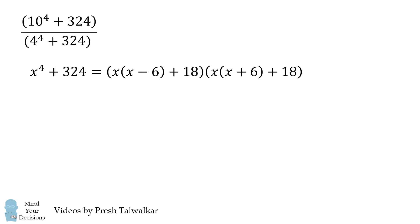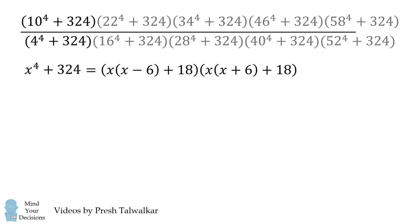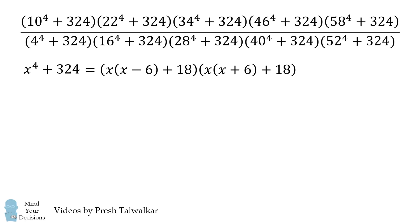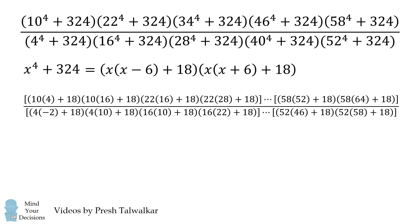Now to get back to our original question, we're going to do a much more involved simplification. So we're going to use the Sophie Germain identity and use the formula presented here to simplify every single term in the numerator and every single term in the denominator. Now let's take a look if there's any cancellation. The first term in the numerator cancels out with the second term in the denominator. Then the second term in the numerator cancels out with the third term in the denominator, and this pattern continues.